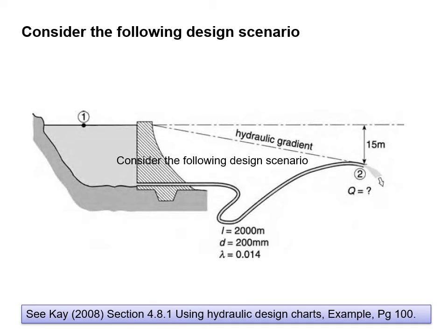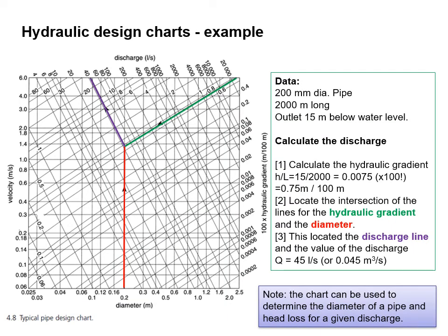Let's consider a simple design scenario. We have a reservoir with a dam; the top water level is position one. An outlet pipe is connected through the underneath of the dam and the outlet at position two is 15 meters below the original surface level. The pipe diameter is 200 millimetres and the pipe is 2000 meters long. We first calculate the hydraulic gradient — expressed as 100 times the hydraulic gradient — giving a value of 0.75 meters per 100 meters. We then locate the intersection of the lines for hydraulic gradient and diameter on the chart, and reading the discharge line gives 45 litres per second, which is 0.045 cubic meters per second.